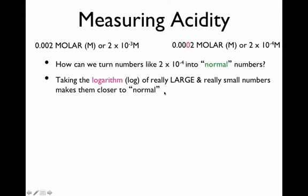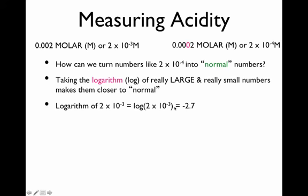This is why logarithms were introduced at the beginning of this unit. The inventor said: I don't like this number, so why not take the logarithm to make it more understandable? For example, the logarithm of 2 × 10⁻³, punched into a calculator, turns out to be −2.7. So instead of 2 × 10⁻³, you could describe the concentration as −2.7, which is more understandable.